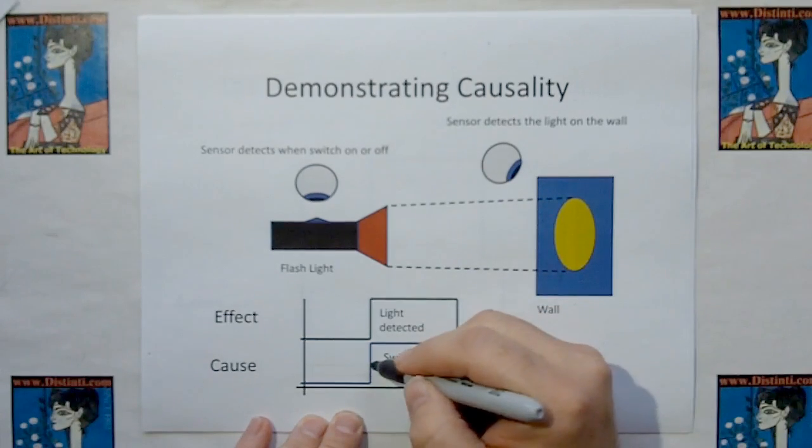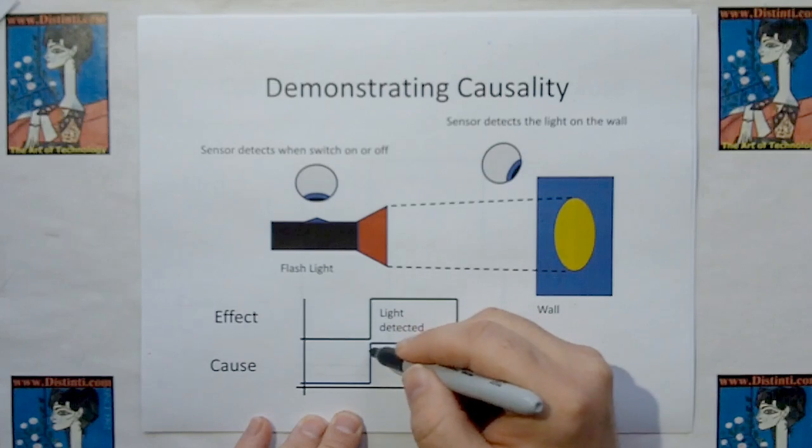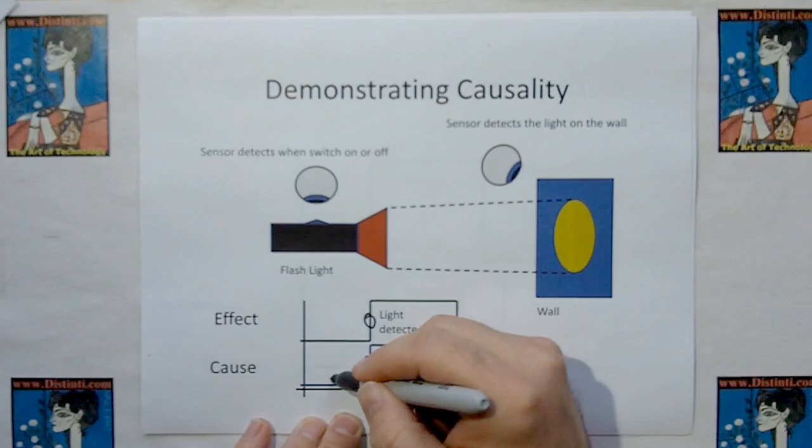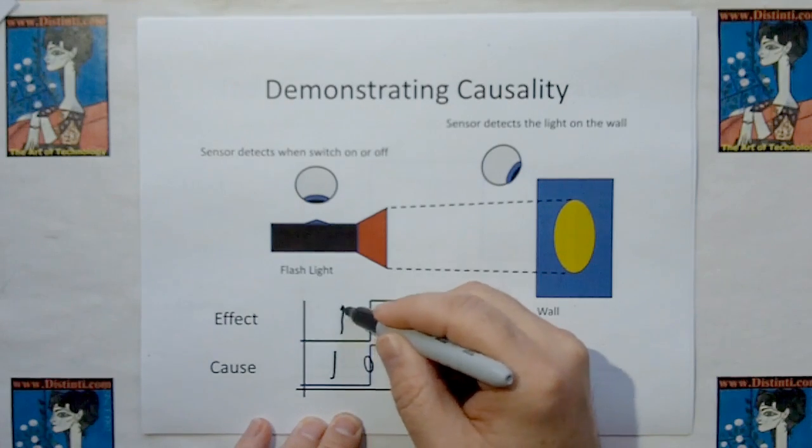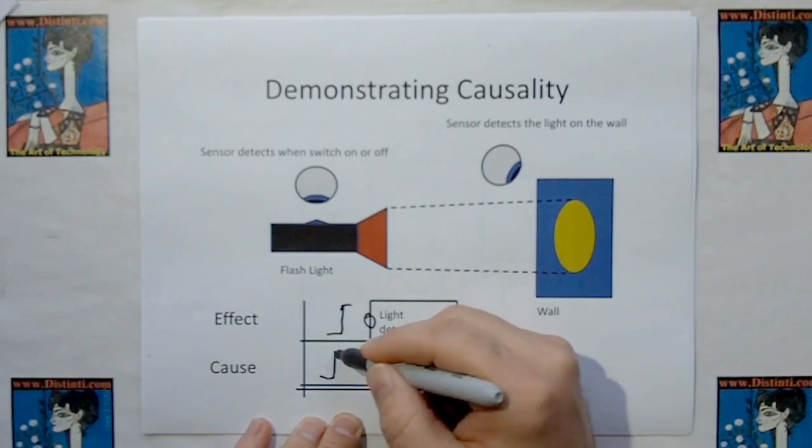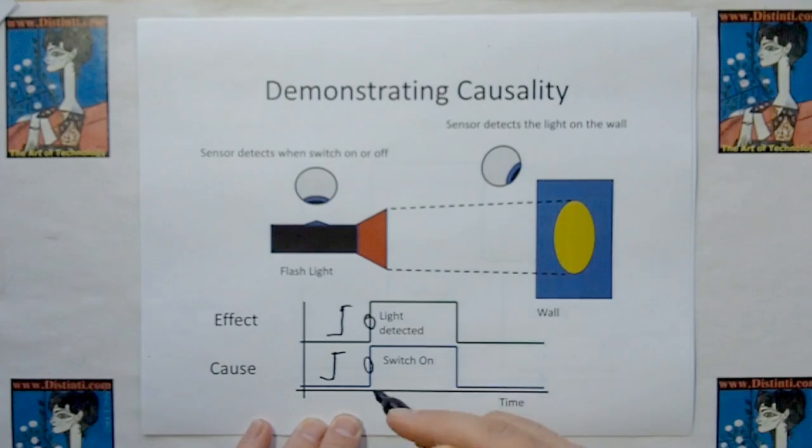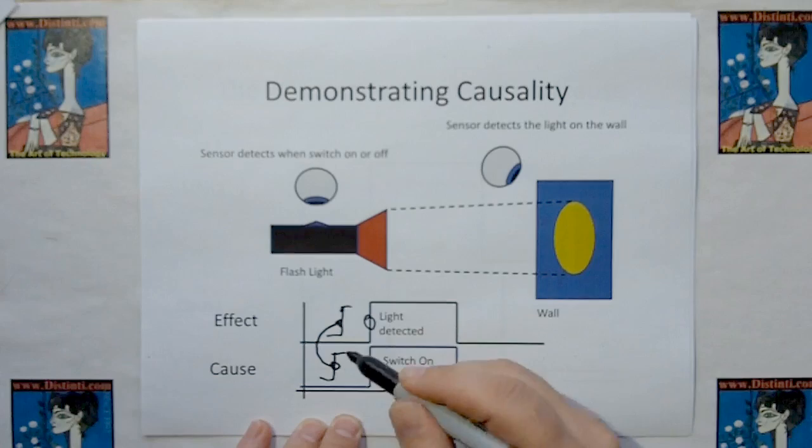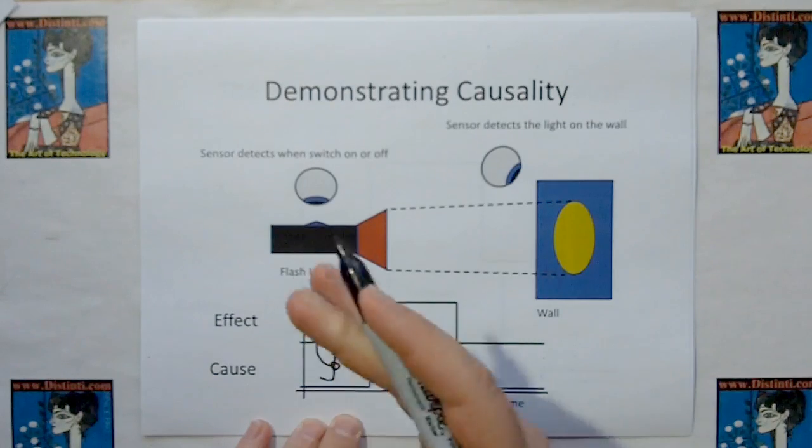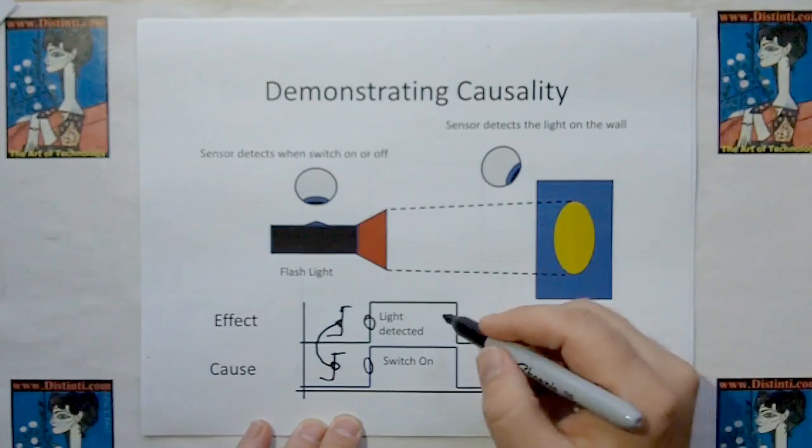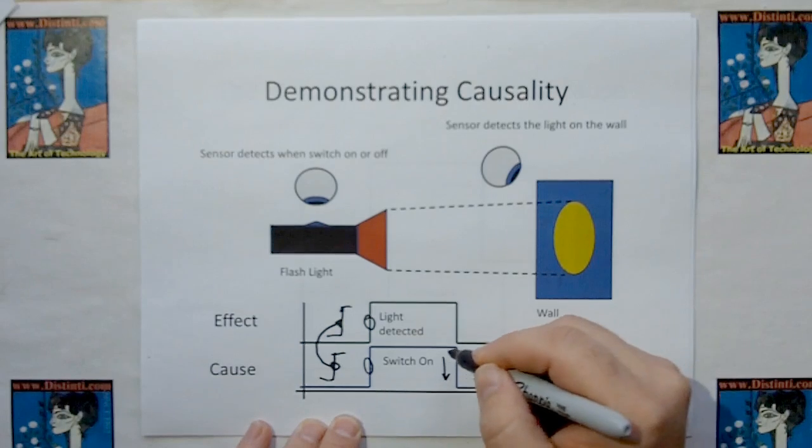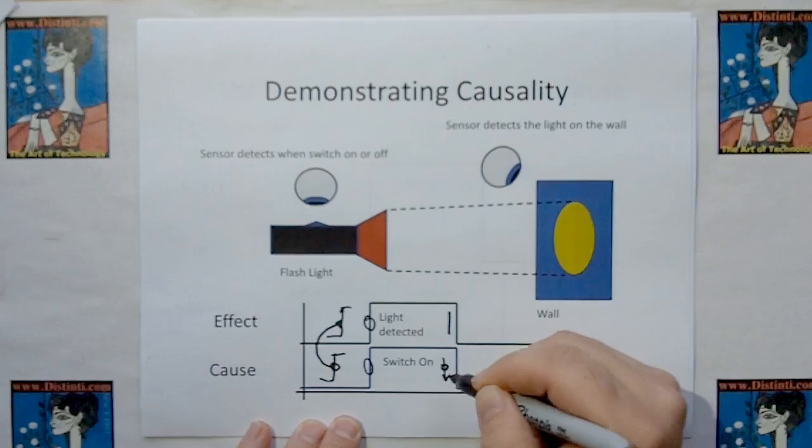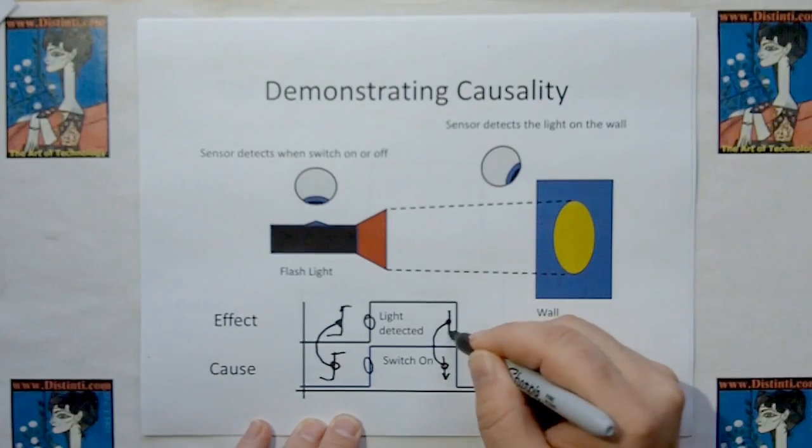And what we say here is because these look like they're coming together, but what's actually happening, if we blow this up, this guy is actually leading this guy by a very, very small amount. Because this is all happening at the speed of light. So we say that the cause leads the effect. The cause leads means it comes earlier in time than the effect. And likewise, when the switch goes off, it goes off earlier than the effect. So the cause going off leads the effect coming down.